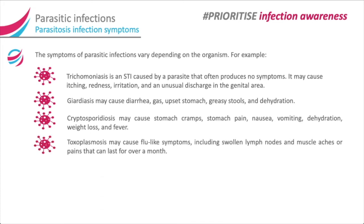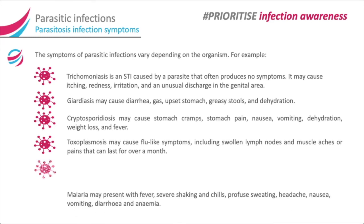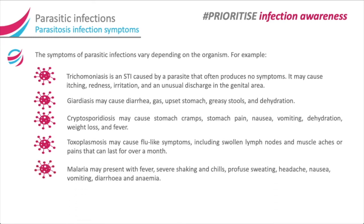Toxoplasmosis may cause flu-like symptoms including swollen lymph nodes and muscle aches or pains that can last for over a month. Malaria may present with fever, severe shaking and chills, profuse sweating, headache, nausea, vomiting, diarrhoea and anaemia.